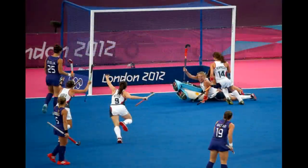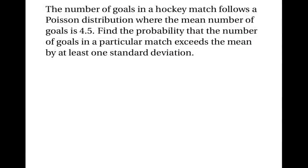My second example is to do with hockey. Suppose that the number of goals in a hockey match follows a Poisson distribution, where the mean number of goals is 4.5. Let's find the probability that the number of goals in a particular match exceeds the mean by at least one standard deviation. In this situation, x, the number of goals in a match, follows the Poisson distribution with parameter 4.5.